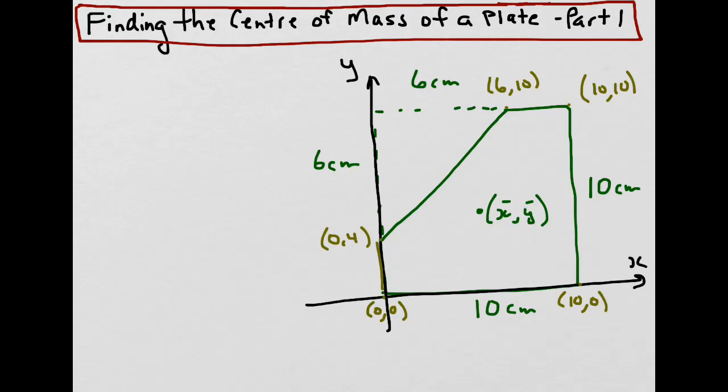What we also know is the equation of the boundary lines that make up the shape. For example, the line at the top, this side right here, the equation would be y = 10. Along the bottom, the equation of this line here would be y = 0. The equation of the vertical side, this one right here, would be x = 10.